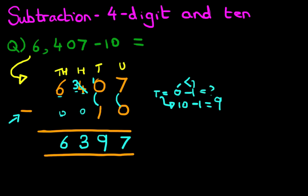6,407 minus 10 is 6,397. And that is our answer. That is correct. Let's give it a nice big tick. So that is how we do subtraction of 4-digit numbers and the number 10 using the vertical format.